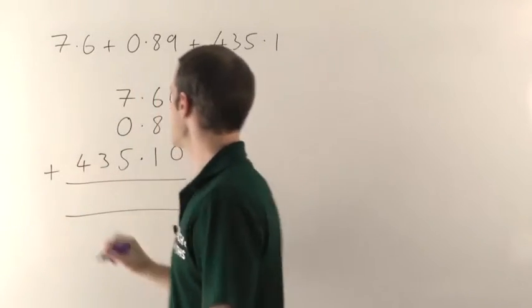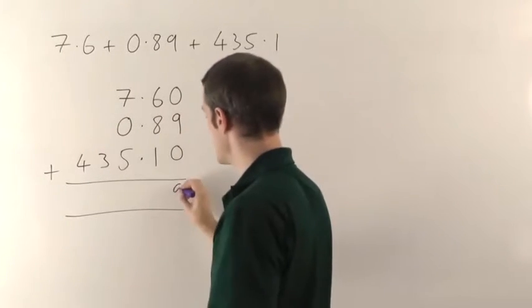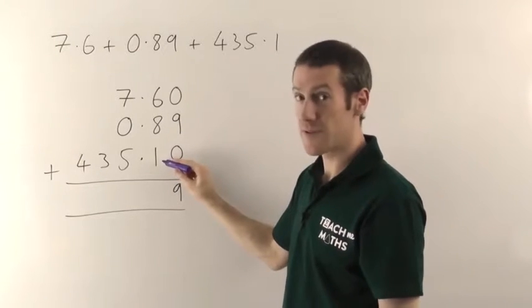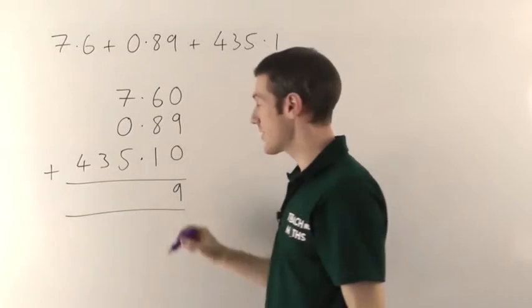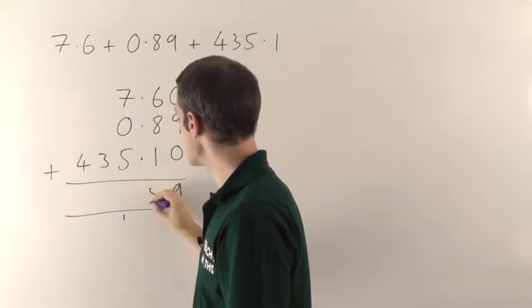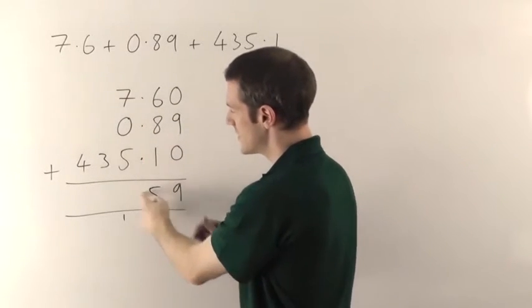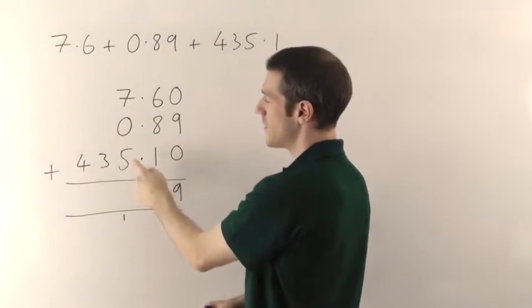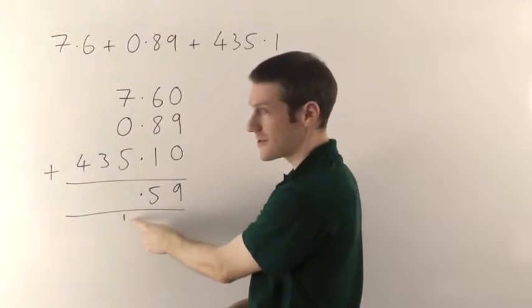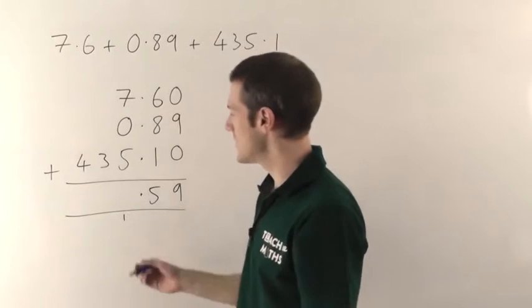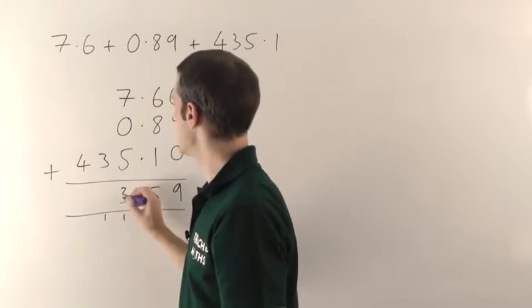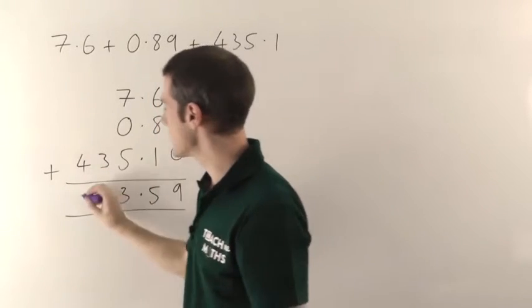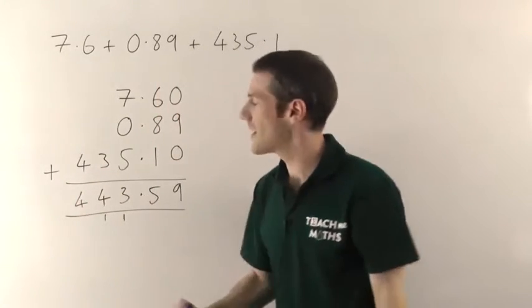Once you've lined it all up, it's just straightforward addition. 0 plus 9 plus 0 is just 9. 6 plus 8 gives you 14, plus 1 gives you 15. You must remember to carry the one here, so you carry the one to give you 15. The decimal points will all sit underneath each other, including the one in the answer. 7 plus 5 is 12, plus the one you carried—don't forget about that one—gives you 13. Carry the one again. 3 plus the one you carried is 4, and 4 plus nothing else gives you 4. So the final answer here will be 443.59.